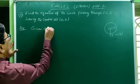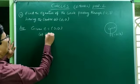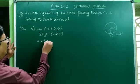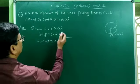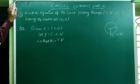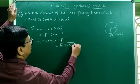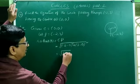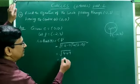Given: center C = (0, 0) and P = (−2, 3). Radius r = CP = √((−2−0)² + (3−0)²) = √(4 + 9) = √13.